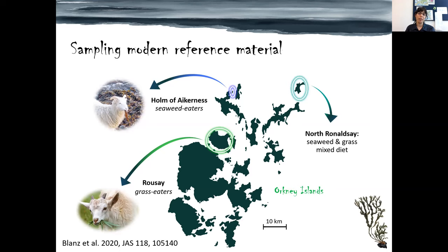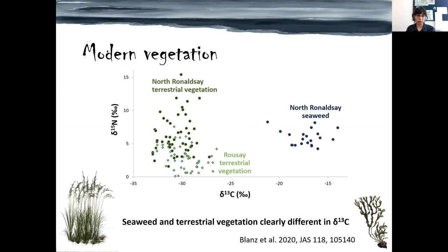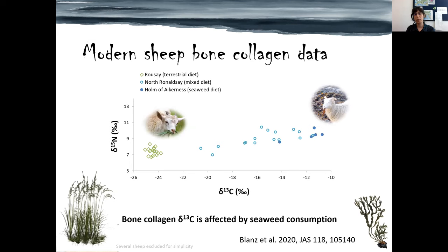We took samples from present-day sheep bones and teeth and terrestrial vegetation and seaweed from the Orkney Islands to get reference data of what seaweed consumption looks like in bone collagen and also in teeth. When looking at plant isotope ratios from two islands, we see that terrestrial vegetation has a much lower carbon isotope ratio than seaweed. When we look at bone collagen from seaweed-eating and terrestrial-feeding sheep, we see the same pattern — sheep on terrestrial diets had much lower carbon isotope ratios than seaweed-eating sheep, and mixed diets fall somewhere in between. So we can tell how much seaweed was being consumed.